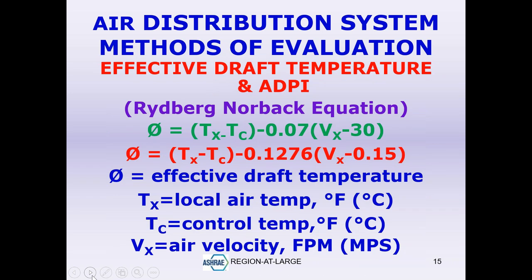There is a method to calculate the Effective Draft Temperature (EDT). The equation — shown in green for IP units and below it for SI units — requires measuring the local air temperature at a particular point (Tx) and the control temperature (the temperature you're trying to maintain in the space, e.g., 75°F). Vx is the air velocity in feet per minute or meters per second. You need to measure velocity at the same point where you're measuring temperature simultaneously.